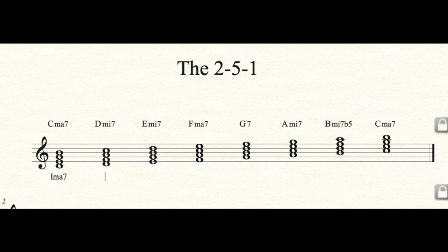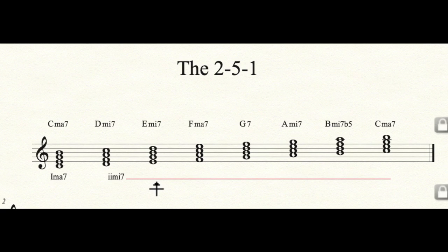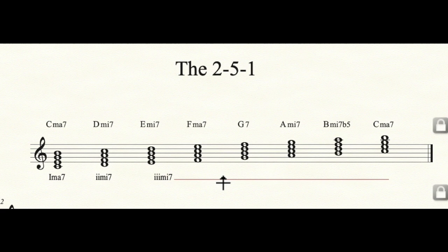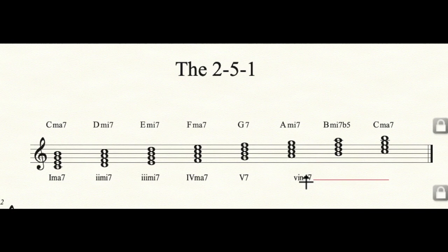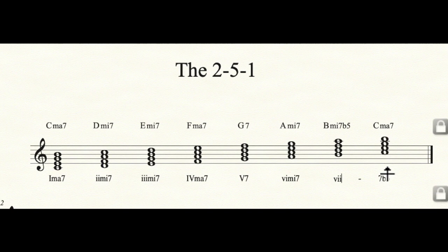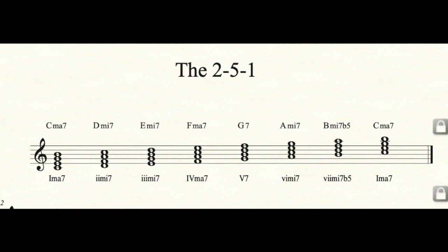This is I major 7, II minor 7 — lowercase numerals for minor — III minor 7, IV major 7, V7, VI minor 7, VII minor 7 flat 5 — or half diminished — and then back to I major 7. So now you can transpose this into any key and it's always going to be the same.